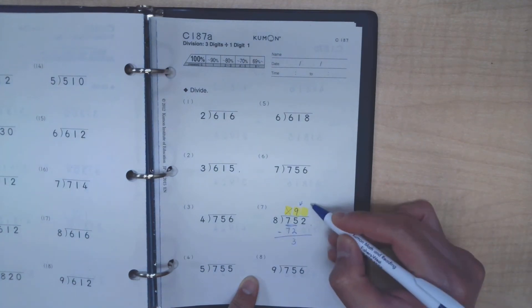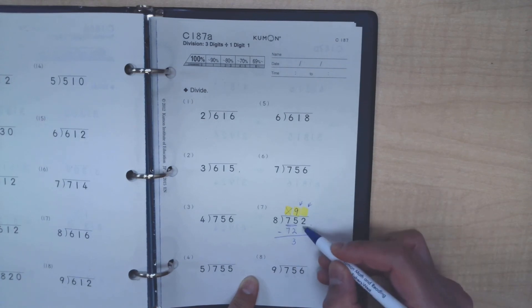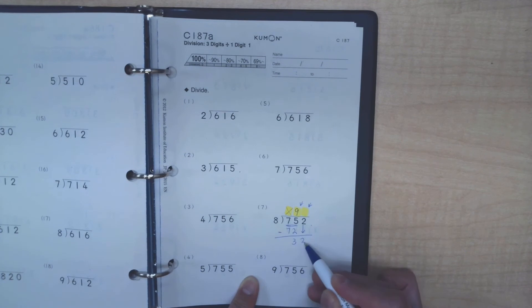In order for us to fill in this next spot, we have to bring the number 2 down and form 32 here.